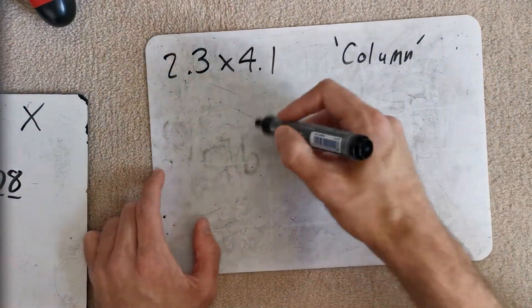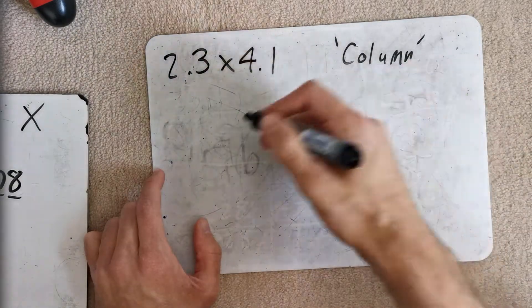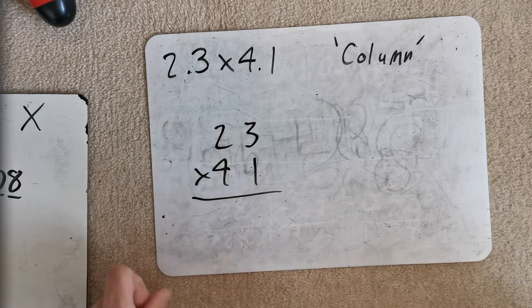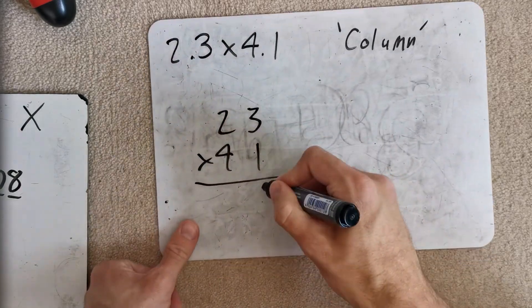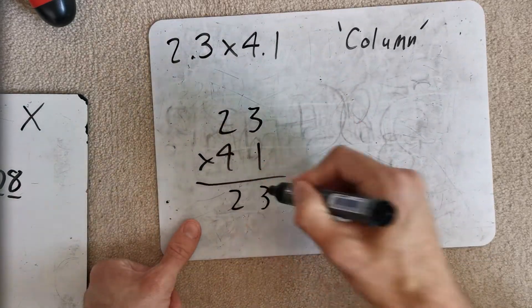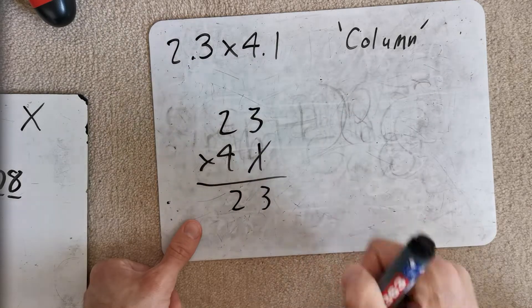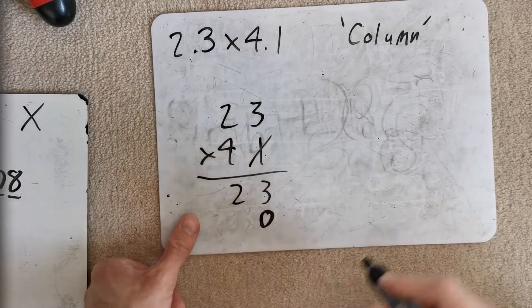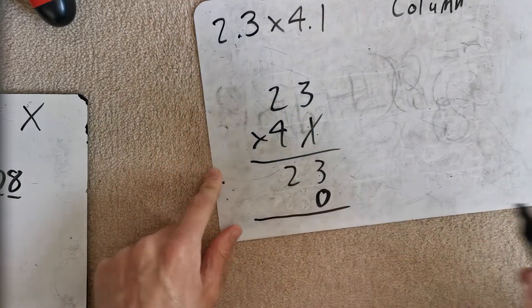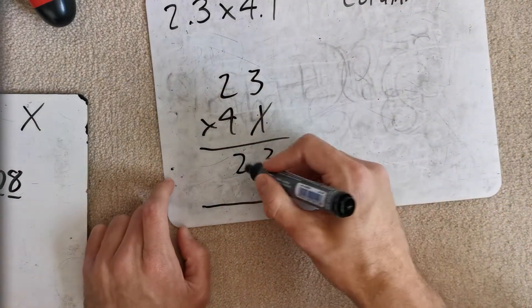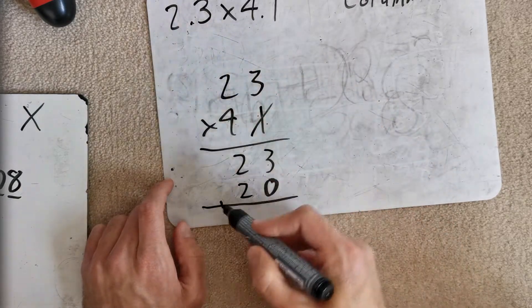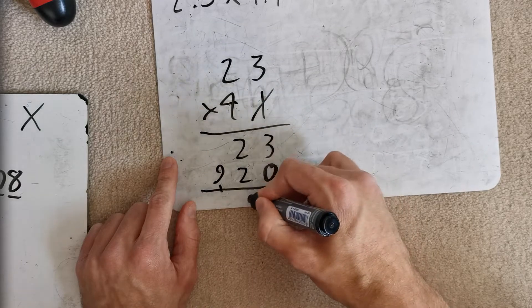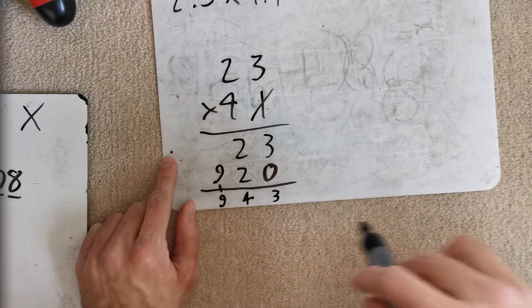And this is the column way of doing it. This way, we just ignore the decimal points completely and just do 23 times 41 using the column method. 3 times 1 is 3. 2 times 1 is 2. We're done with that. 3 times 4. Ah, now. There's one thing that I forgot. Stick a 0 in there because we're working with things that are 10 times bigger. 3 times 4 is 12. Carry the 1. 2 times 4 is 8. Add the 1 is 9. Then we add these up. 3, 4, 9. Okay.